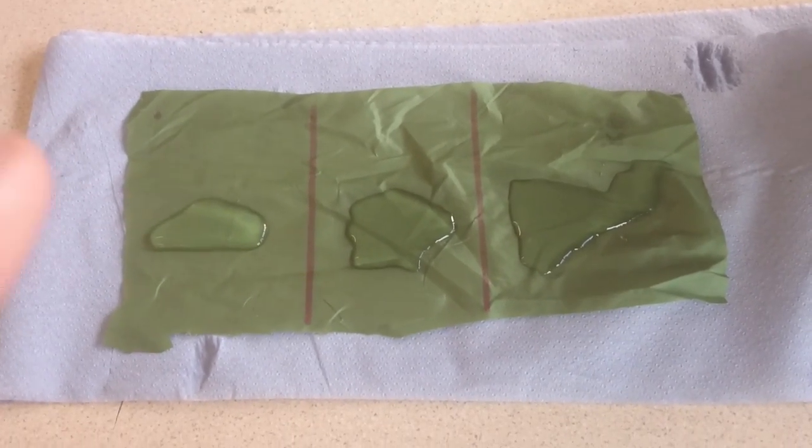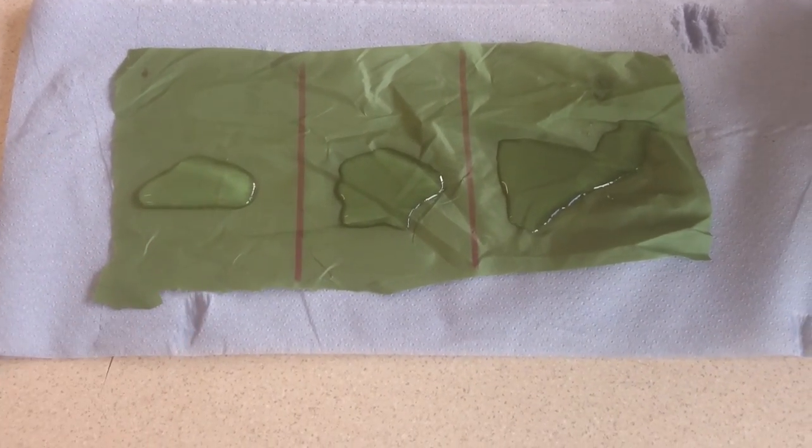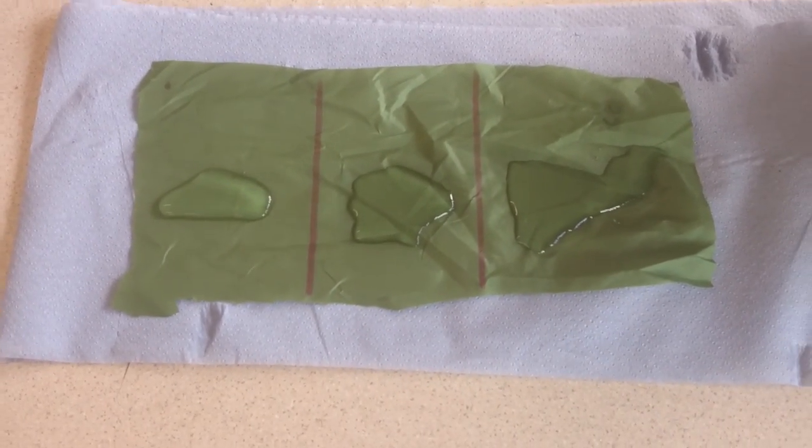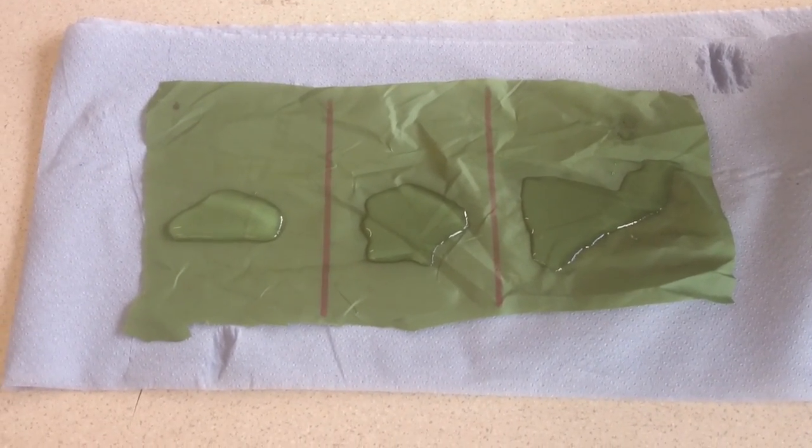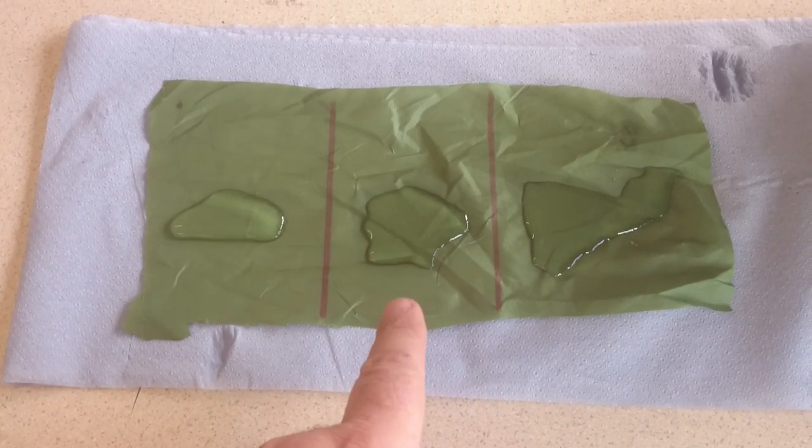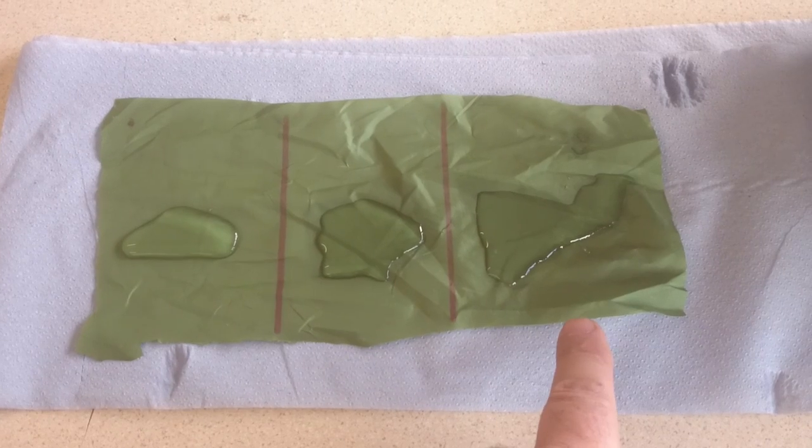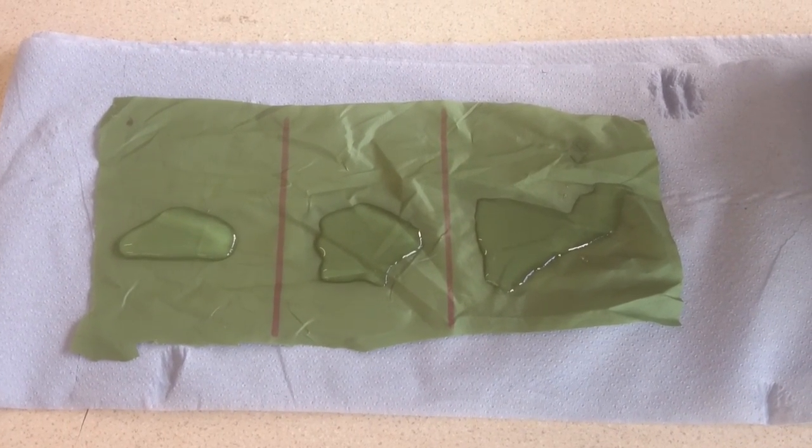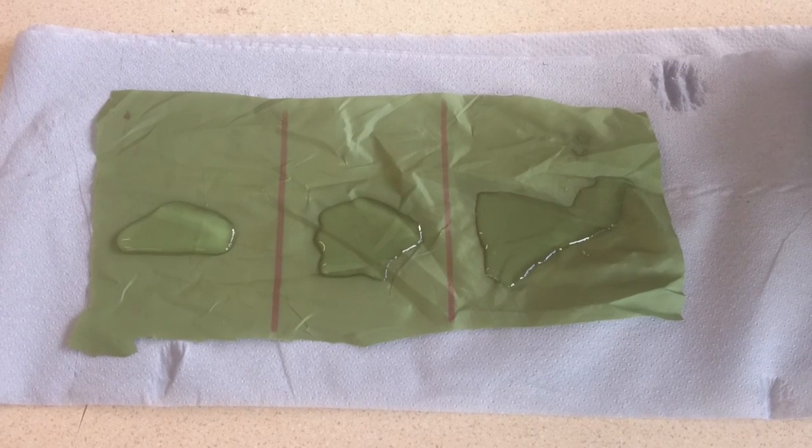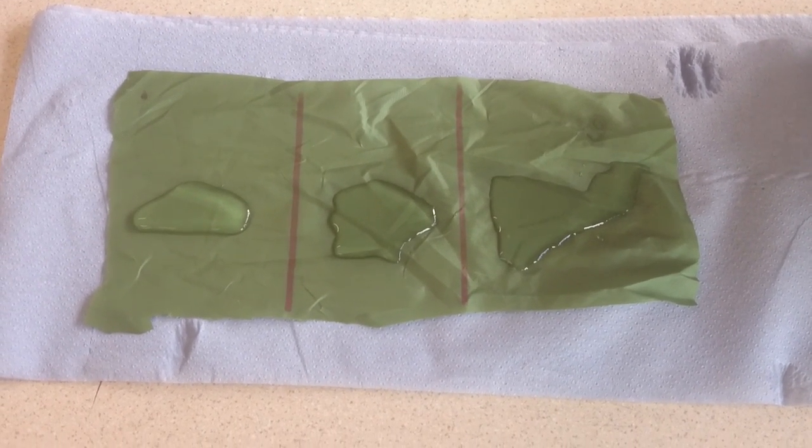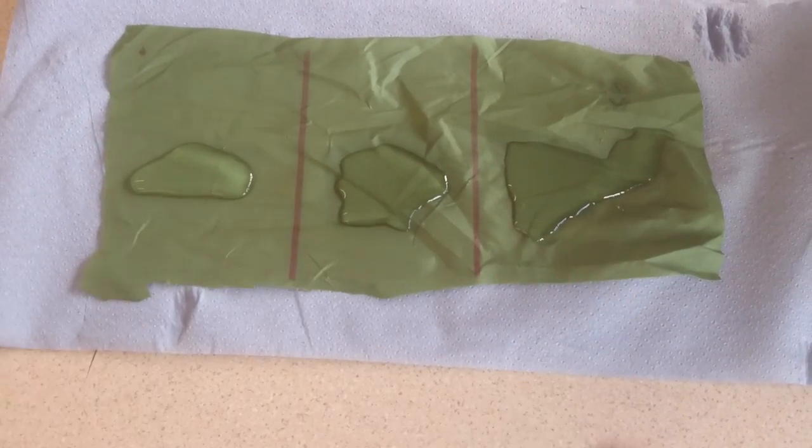On the left there is a section of waterproof fabric that has had no clean solution, nothing put on it, just as standard. Then this middle section here and this section have both been cleaned with a mild solution of fairy liquid and washed over these two areas.